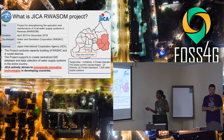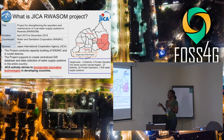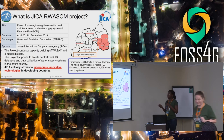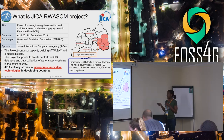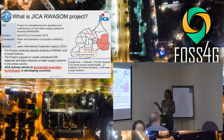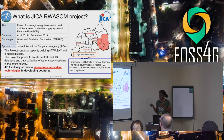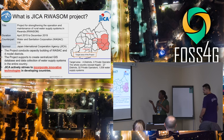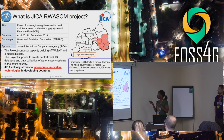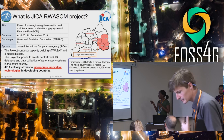JICA has a project in Rwanda. This project aims at strengthening the operation and maintenance of rural water supply systems. It started in April 2015 and will end in December 2019. We had capacity building of WASAC staff in Fomodo district, which are the eastern districts that endured several droughts due to their locations.